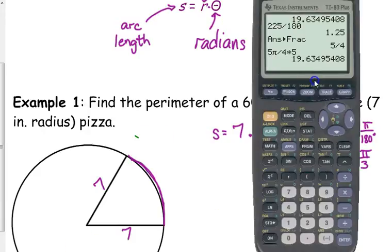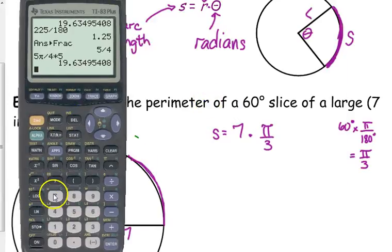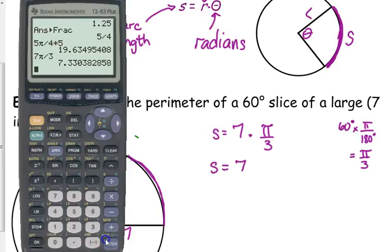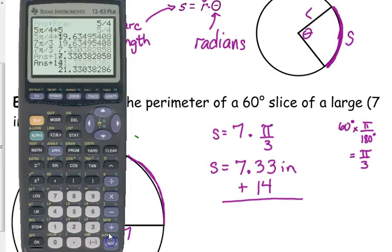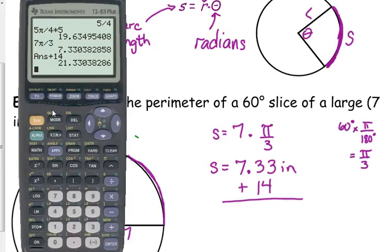So, this is a real-world application problem. So, we're going to multiply it all the way out. Usually, I would leave it 7 pi over 3. But, we want to know the actual length. So, that tells us that the arc, or the crust of our pizza, is 7.33 inches long. And then, we want the perimeter. So, we've got to add the two sides. They were each 7. So, we've got to add 14 to that. So, the perimeter of the 60-degree slice of pizza is 21.33 inches.